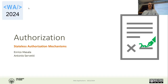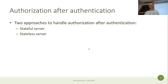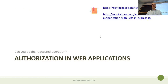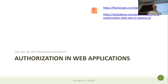The last big topic of the course is authorization. The difference between authorization and authentication — which we saw last time — is that authorization is about what you can do, what you have permission to do. Authentication means we know you are who you claim to be.